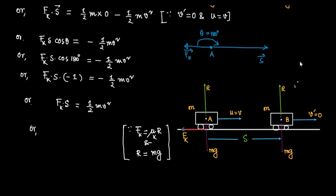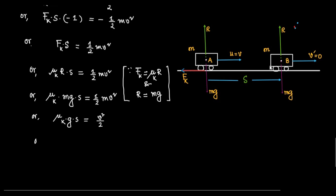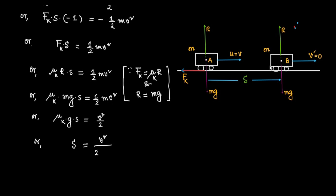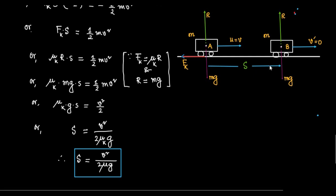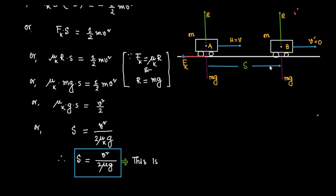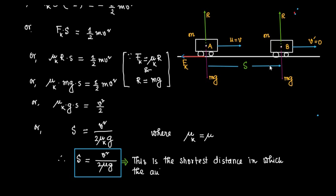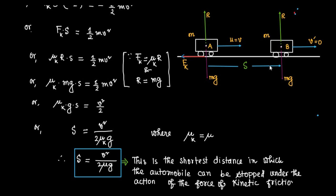We know that kinetic friction Fk equals mu k into R, where mu k is the coefficient of kinetic friction and R is the normal reaction equal to mg. So mu k into R into s equals half m v square, giving mu k into mg into s equals half m v square. Simplifying, mu k into g into s equals v square by 2, so s equals v square divided by 2 mu g. This is the shortest distance in which the automobile can be stopped under the action of kinetic friction, where mu k equals mu.